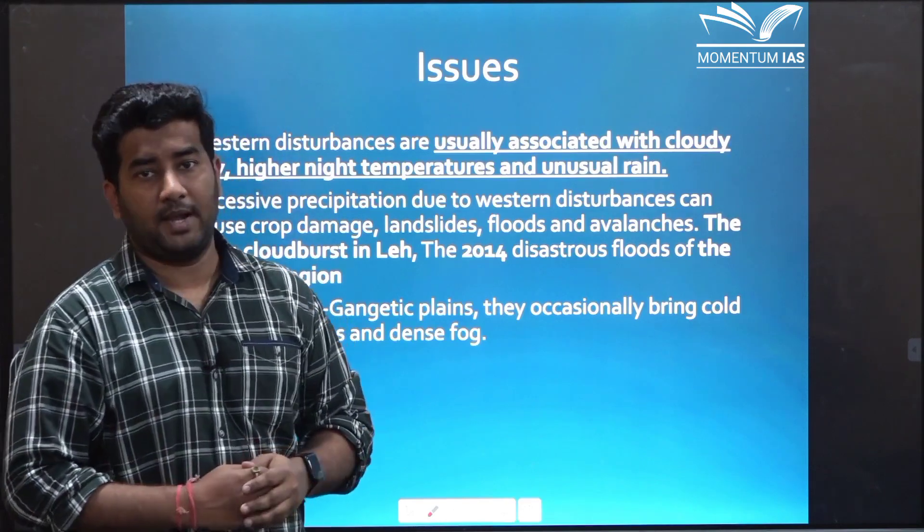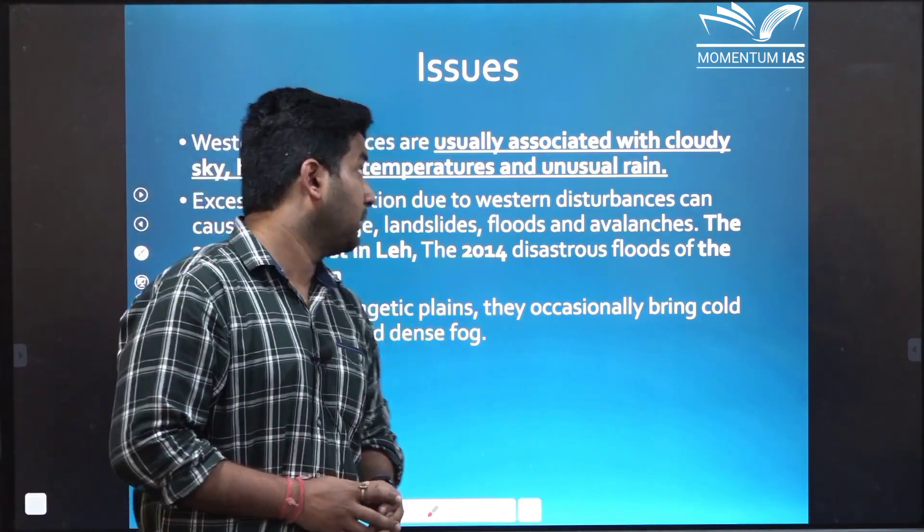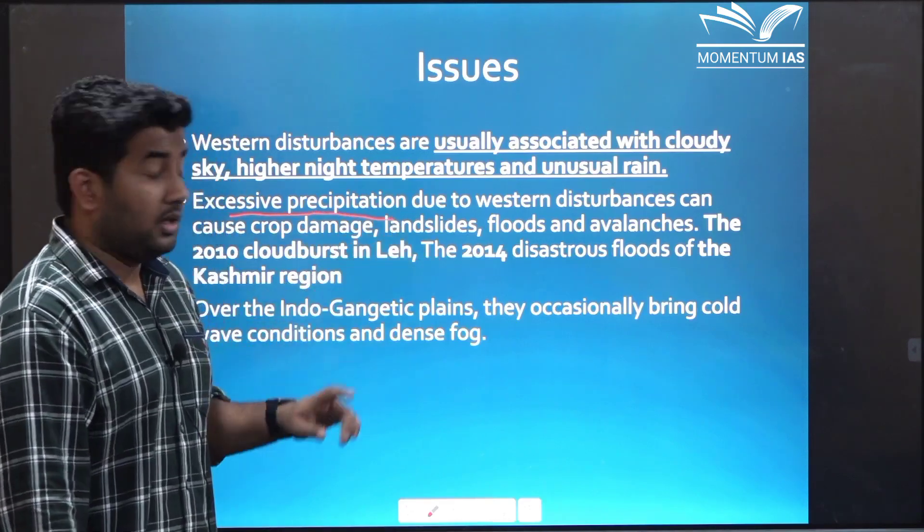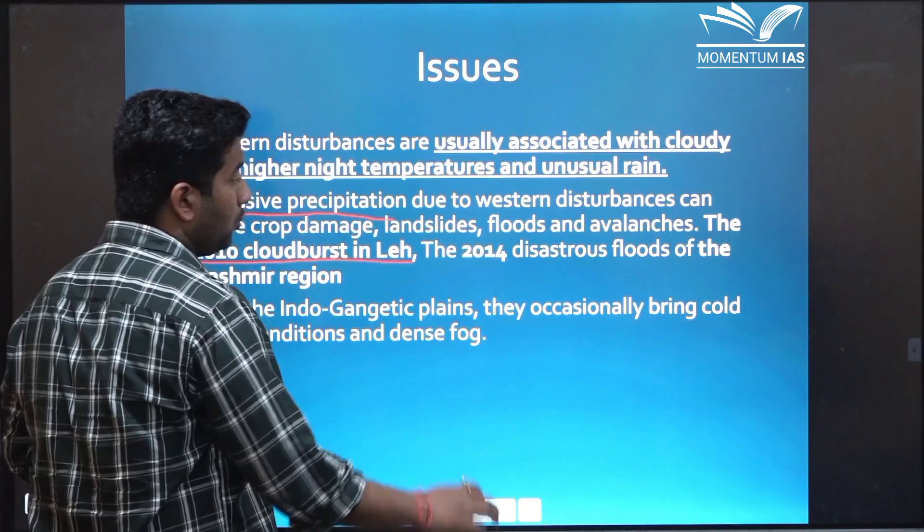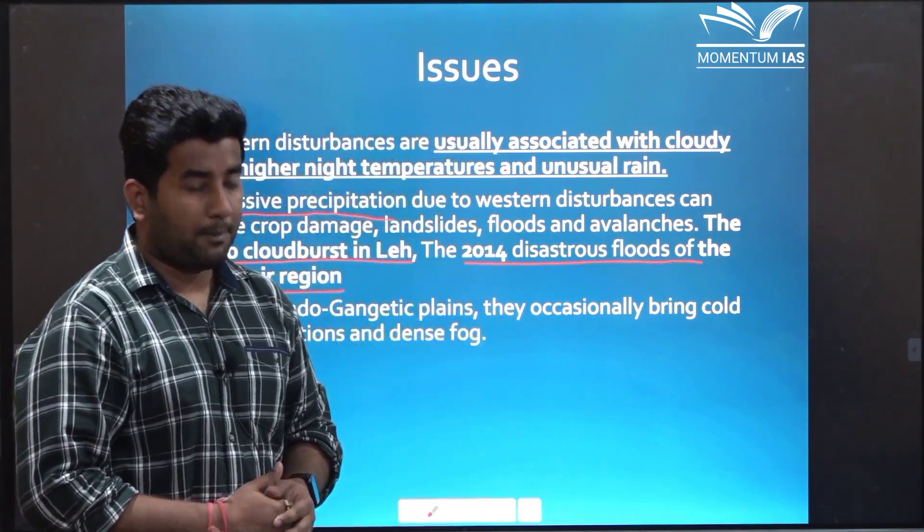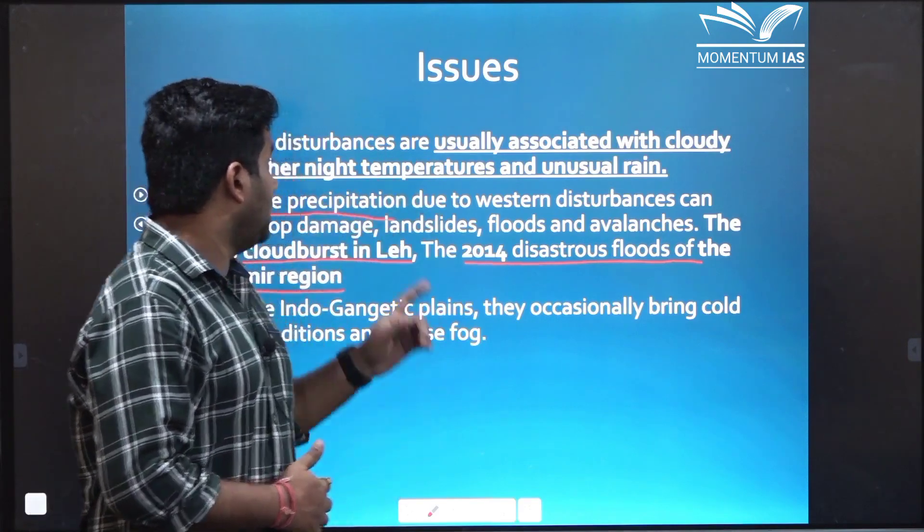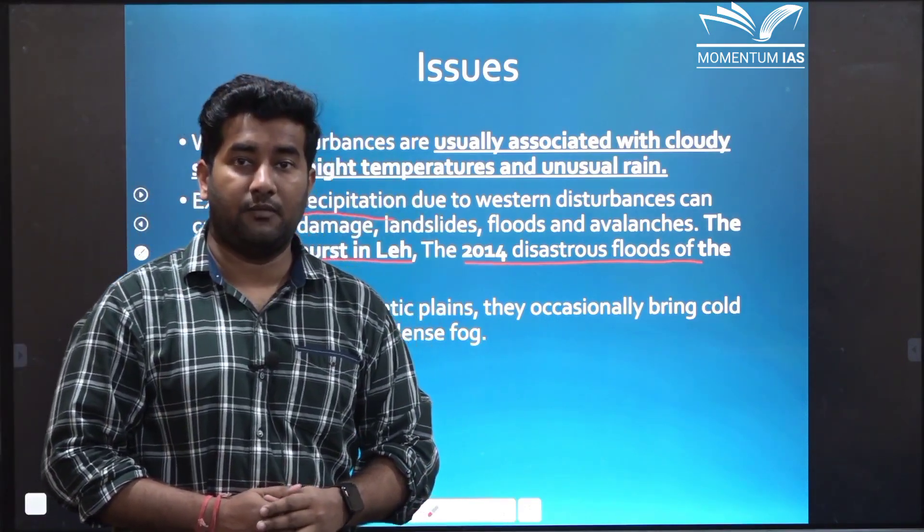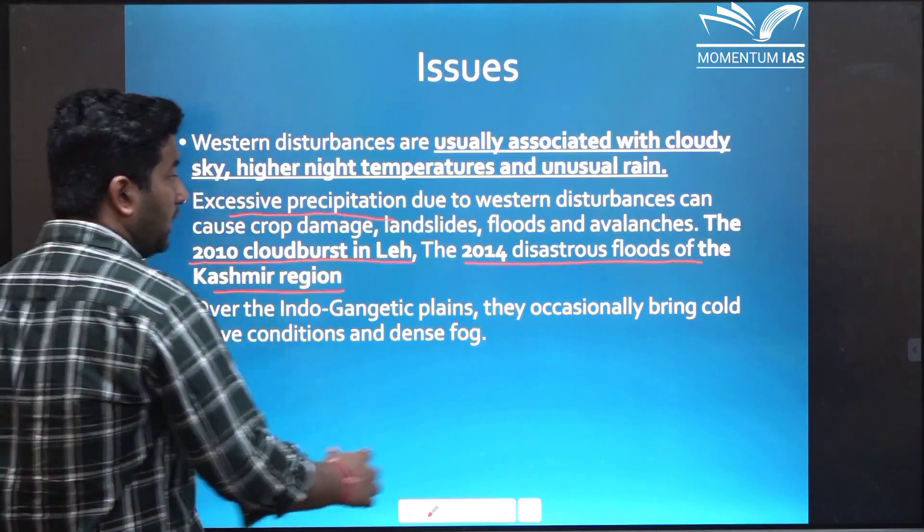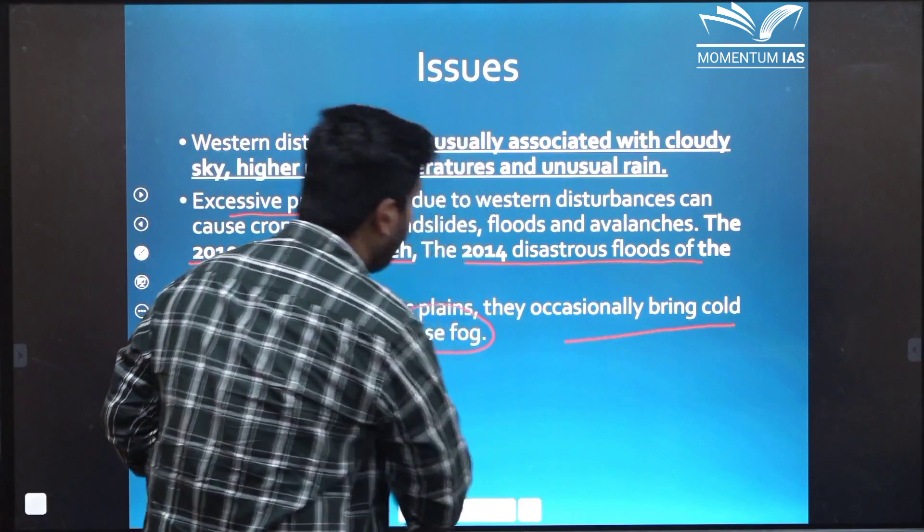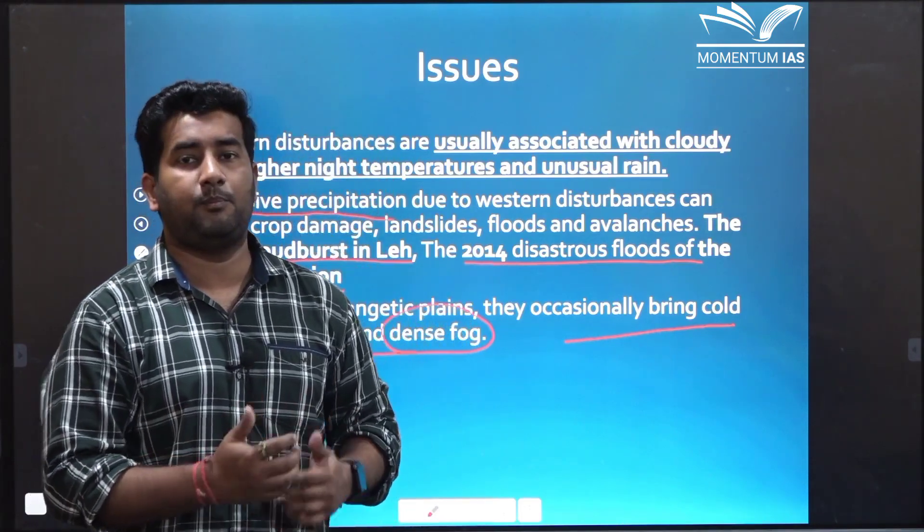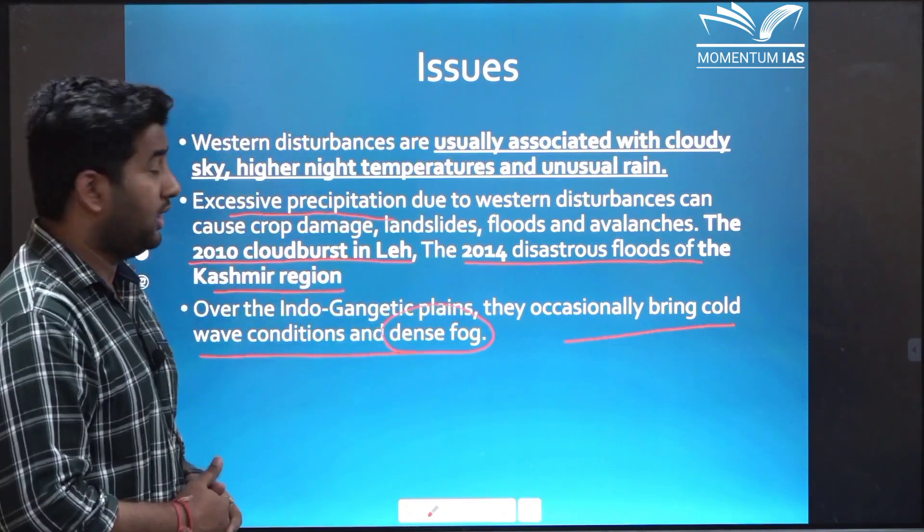Now we know that excess of anything is bad and that is the case with western disturbances also. That means western disturbances when in excess provides excessive precipitation in this region. Some of the well-known events like 2010 cloud burst in Leh, 2014 disaster floods in Kashmir region are attributed to excessive precipitation by western disturbances. Apart from this they also lead to cloudy sky, unusual rain and higher night temperatures in winter. That generally sometimes, not always, sometimes lead to failure of crops. Also they bring cold wave conditions and dense fog. If you are from northern India then you might have noticed that our winters sometimes become very chilly and there is a very difficult condition of fog. That one of the reason is western disturbances.